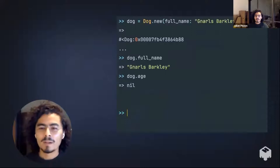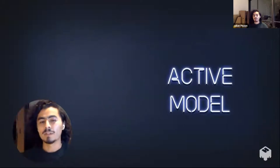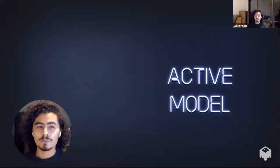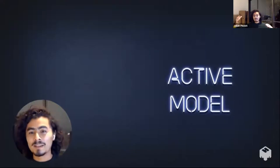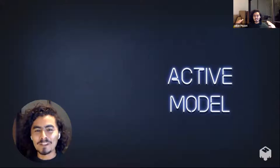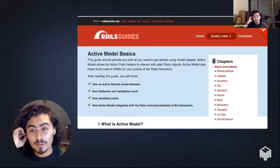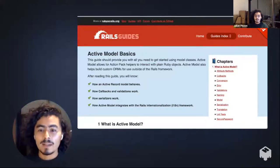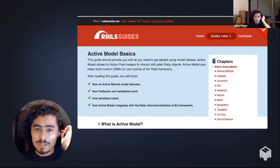All that happens because of Active Model. Active Model is a library in Rails which has a bunch of tools for you to create model-type interfaces similar to the ones Active Record has, allowing you to do everything from very simple to super complex and magical stuff. First, I encourage you to go and read the Rails Guide for Active Model — it's super detailed and has a lot of information. All the Rails Guides are just amazing.